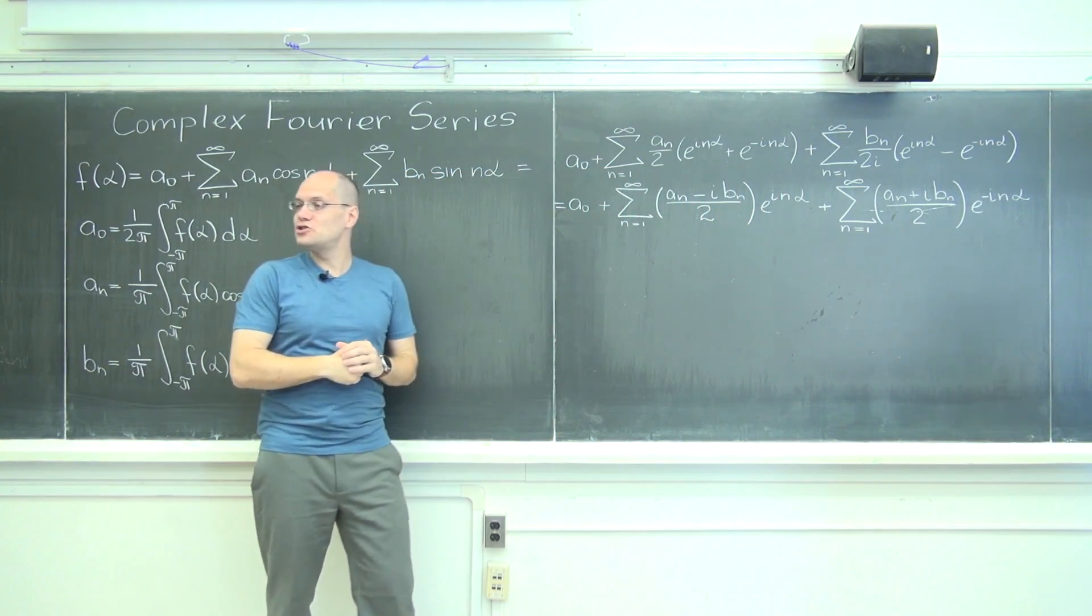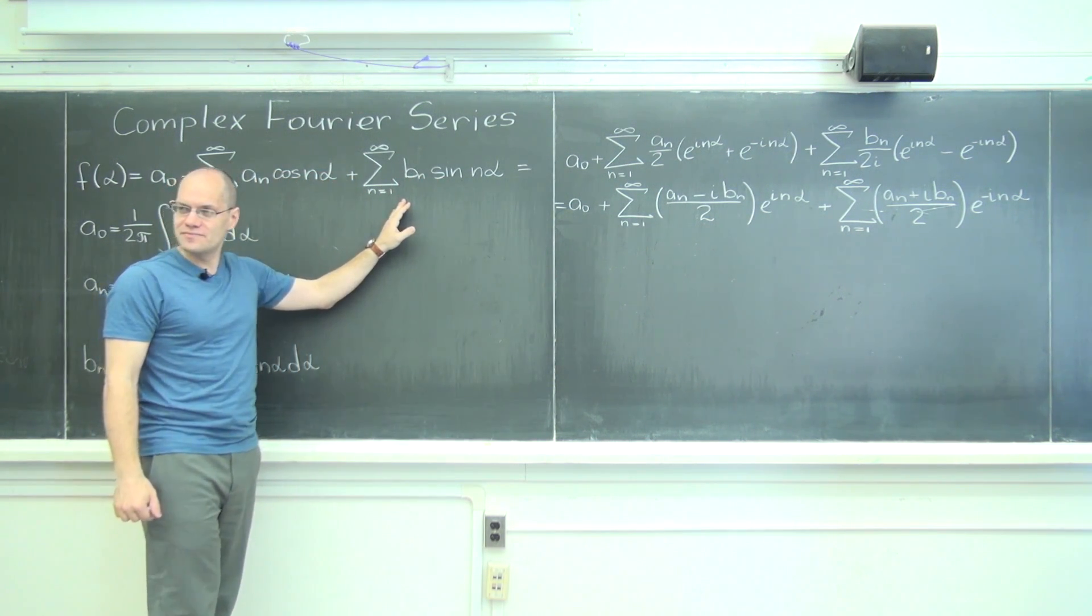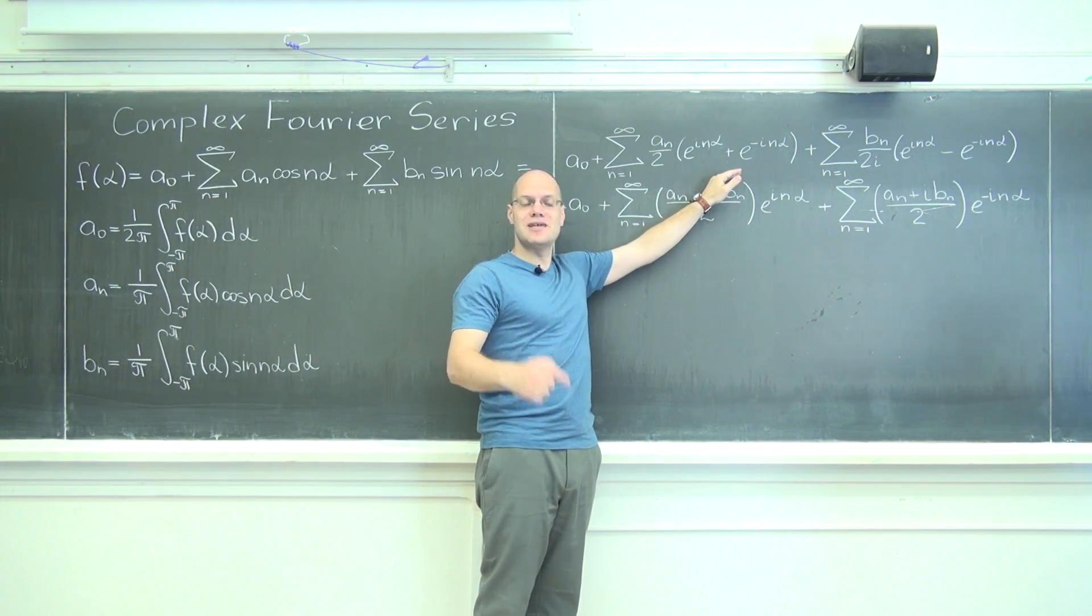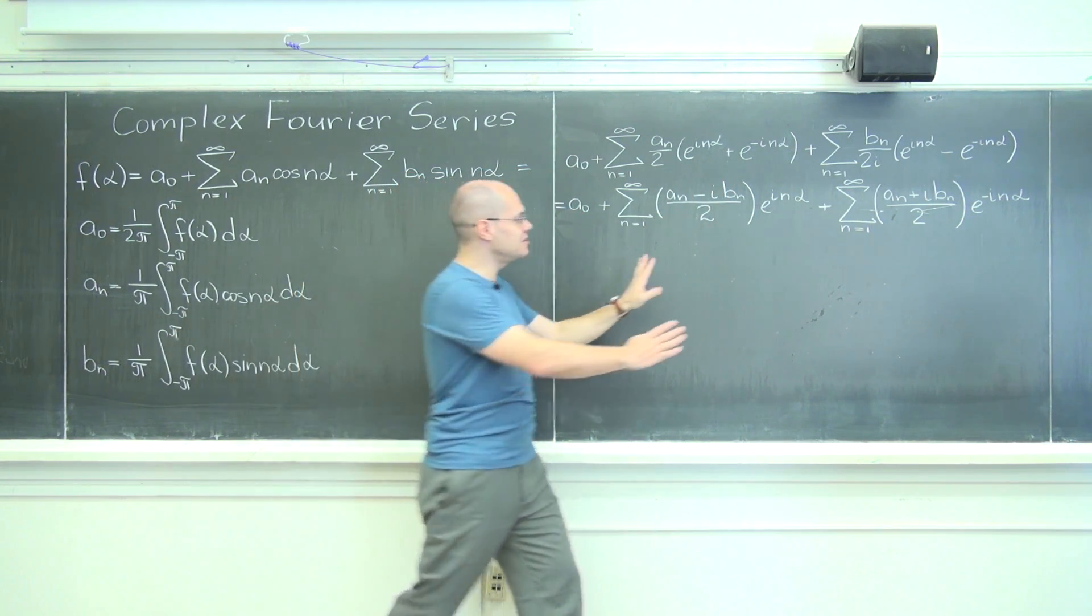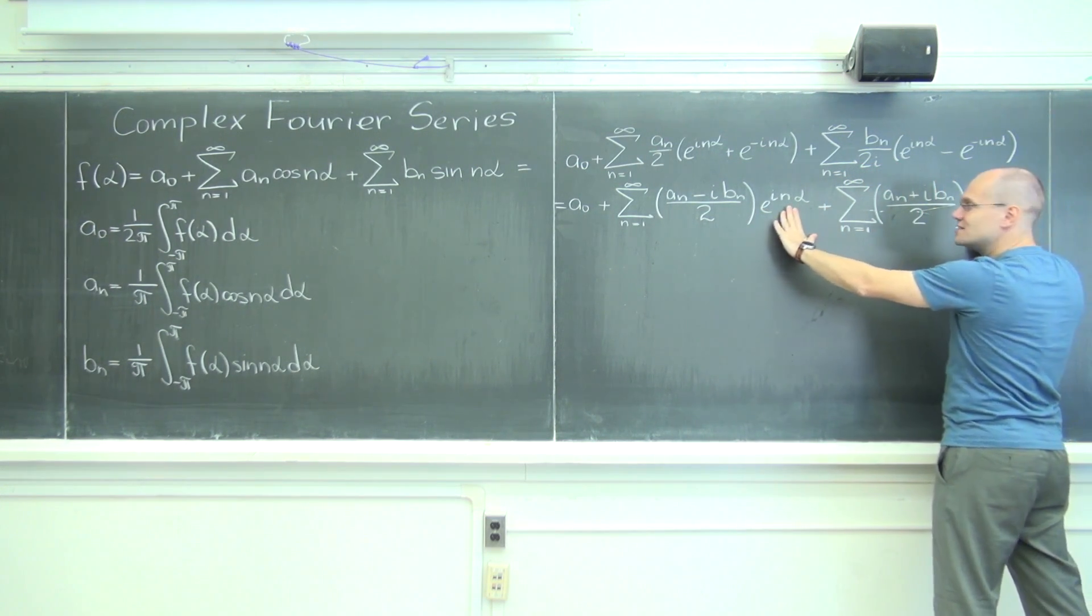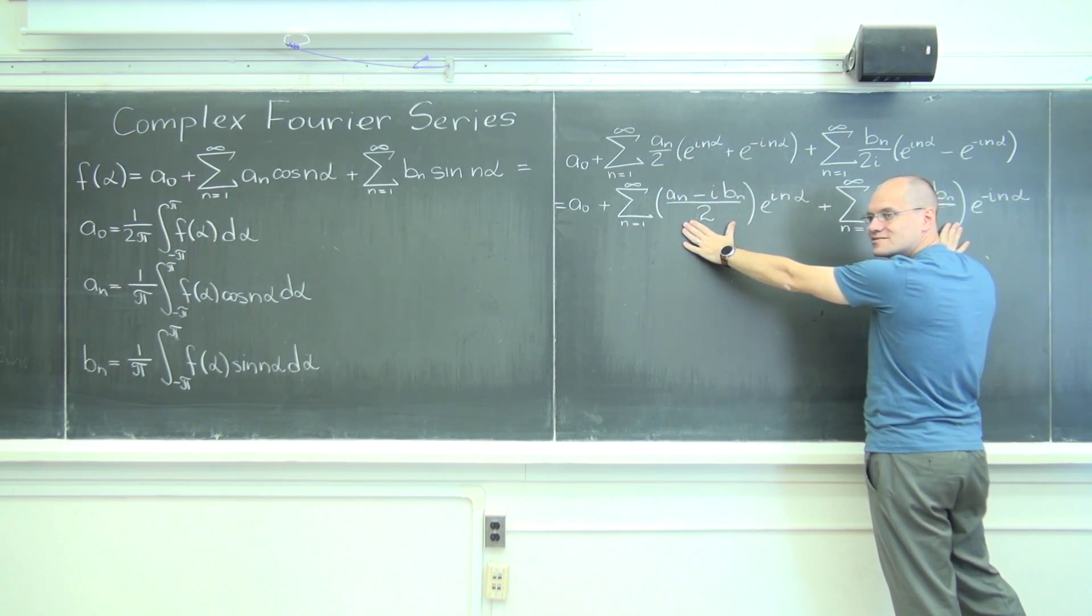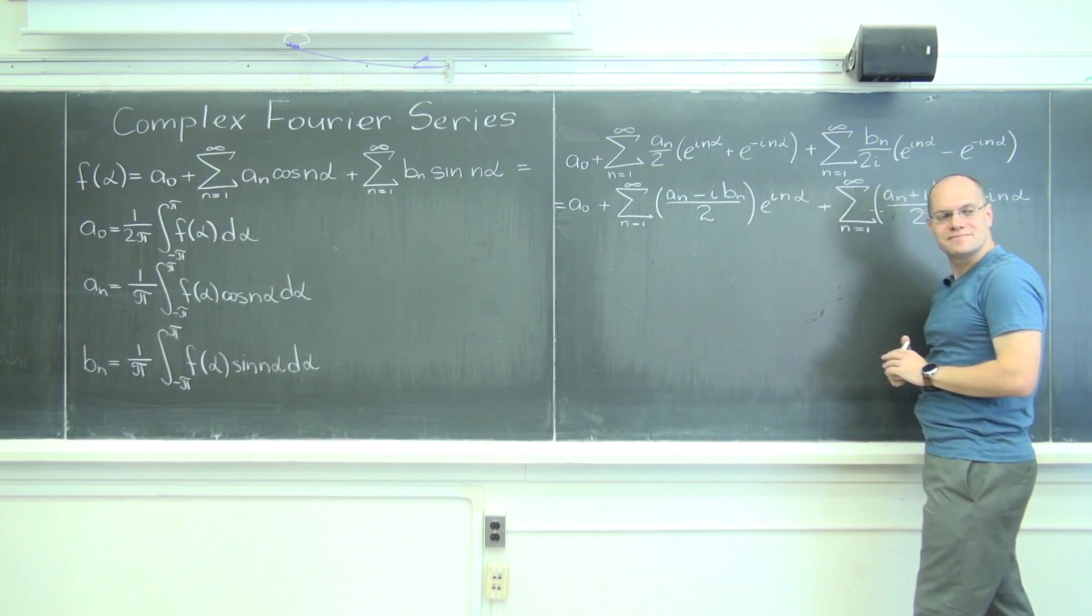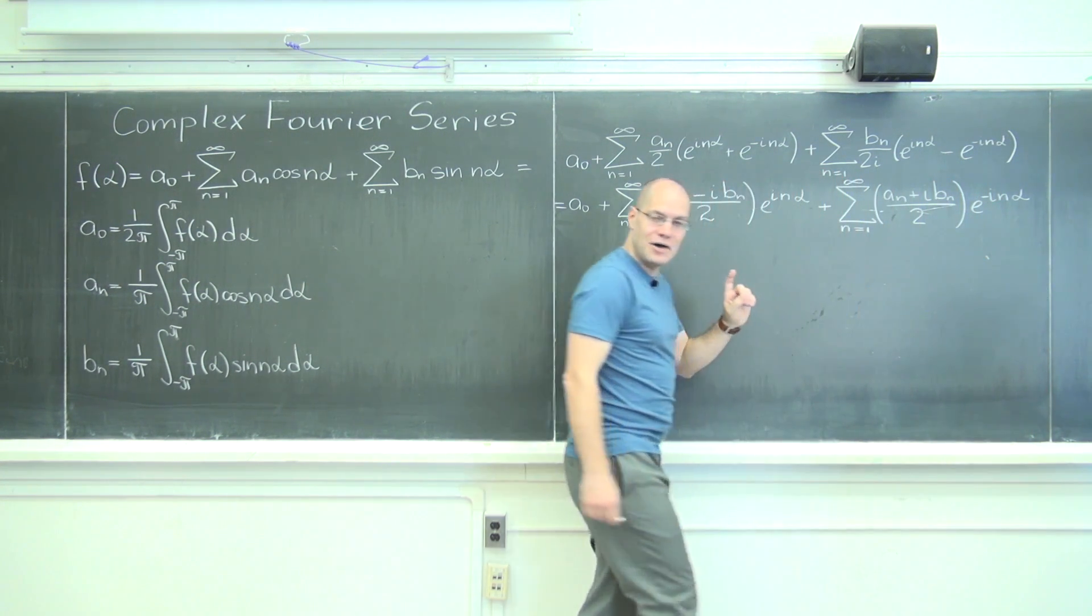But here's what we're going to do now. We're going to collect the like exponentials, so I'll combine each of the e^(inα) with each of the e^(inα). Let's see what we get. In parenthesis we'll have a_n, and now you have to realize that 1/i is -i. So it'll be -iB_n because I want to write the complex numbers in the more standard form.